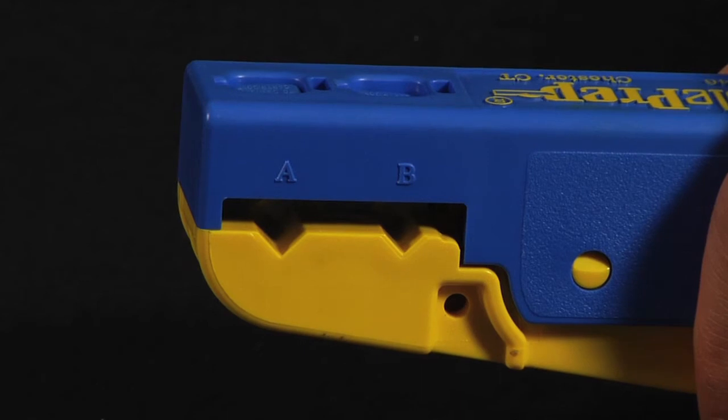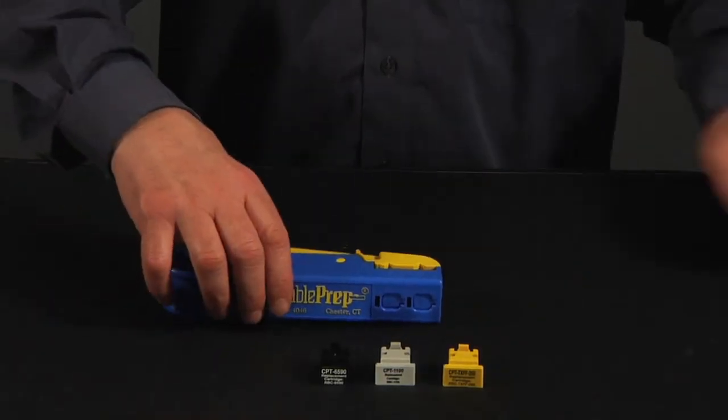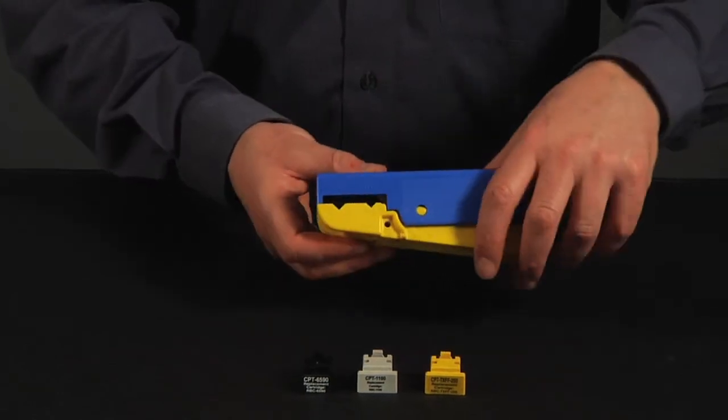The tool contains two cartridge chambers labeled A and B. The tool comes with a simple chart which details proper cartridge placement.